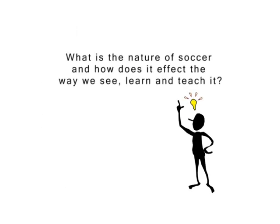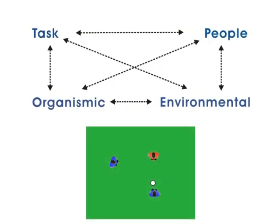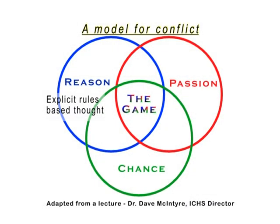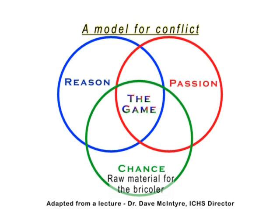Clausewitz offers an insight into this disconnect, one that has significant meaning to learning and decision making. He saw war — and for us, soccer — as a balance between a remarkable trinity: three pillars that cannot be separated from the nature of the event. Reason stands for logic and the rules by which we make sense of things. Passion is the primitive feelings and emotions that can drive or distort action. Chance allows for exploration and creativity — it's nature's surprise in the equation.